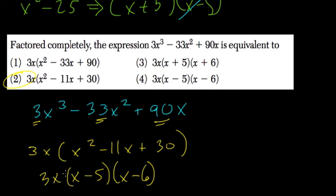So we have 3x, x minus 5, and x minus 6. So here I should have circled choice 2. It wasn't factored completely. I missed that prompt right there. Choice 4 is the completed factored form.